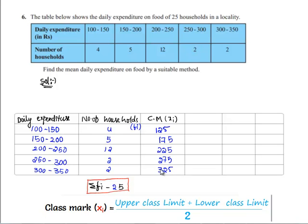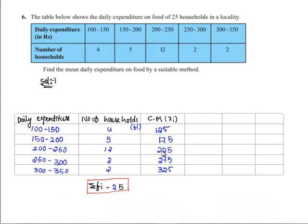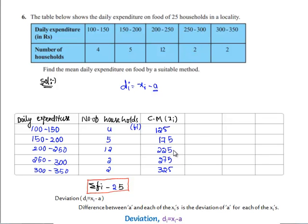If we observe, the xi values are very large, so we shall take the step deviation method to solve this. According to step deviation, we take the deviation di equal to xi minus a, where a is the assumed mean. We consider 225 as the assumed mean.